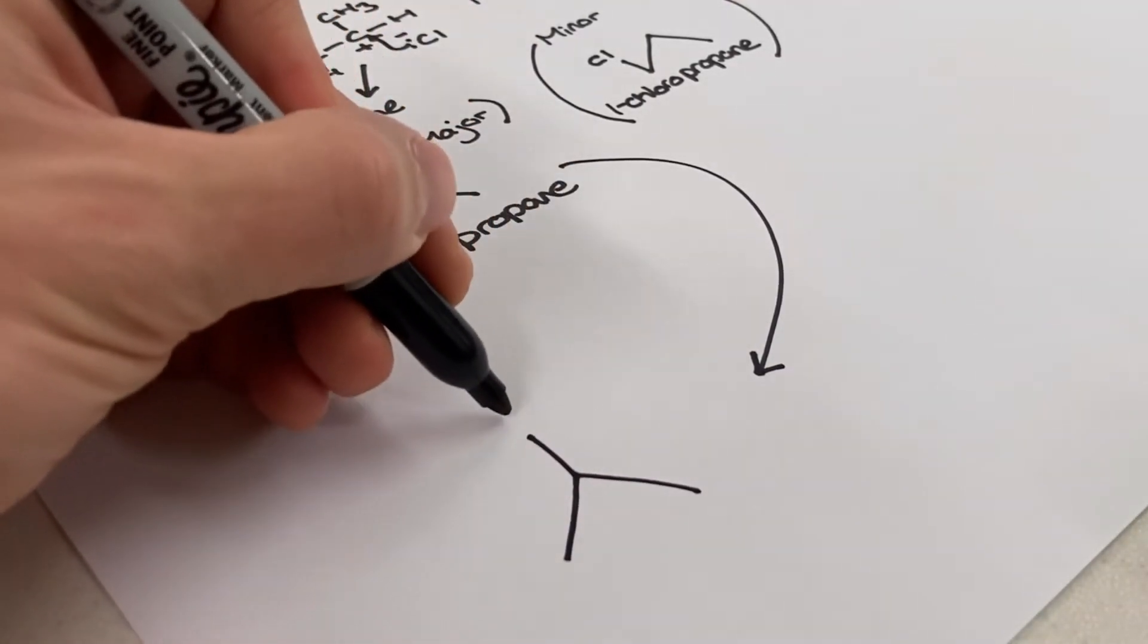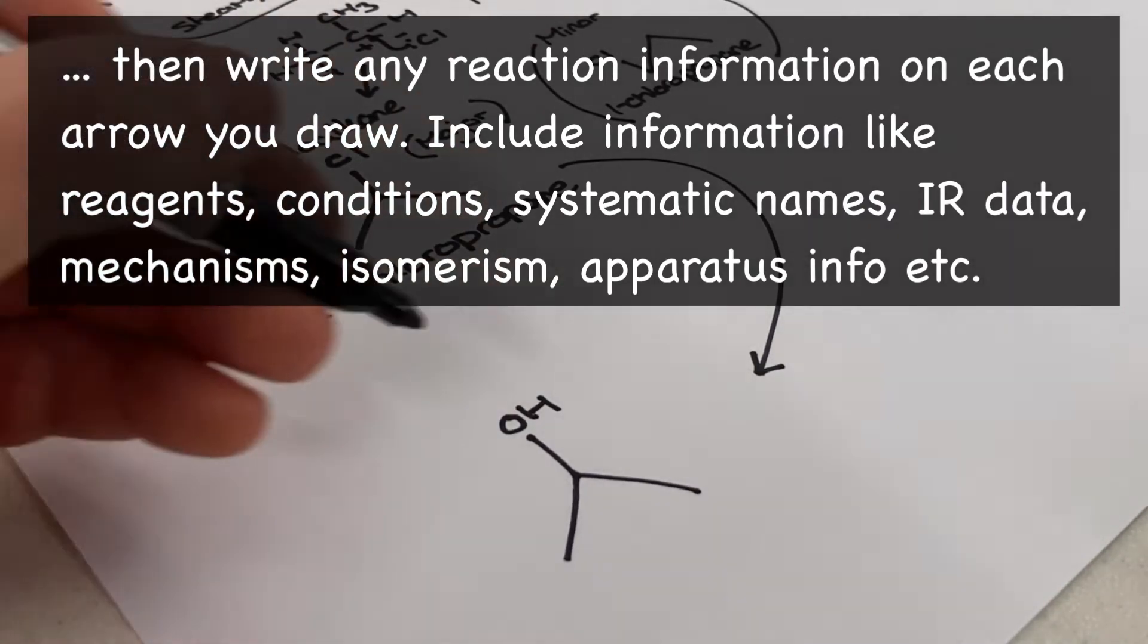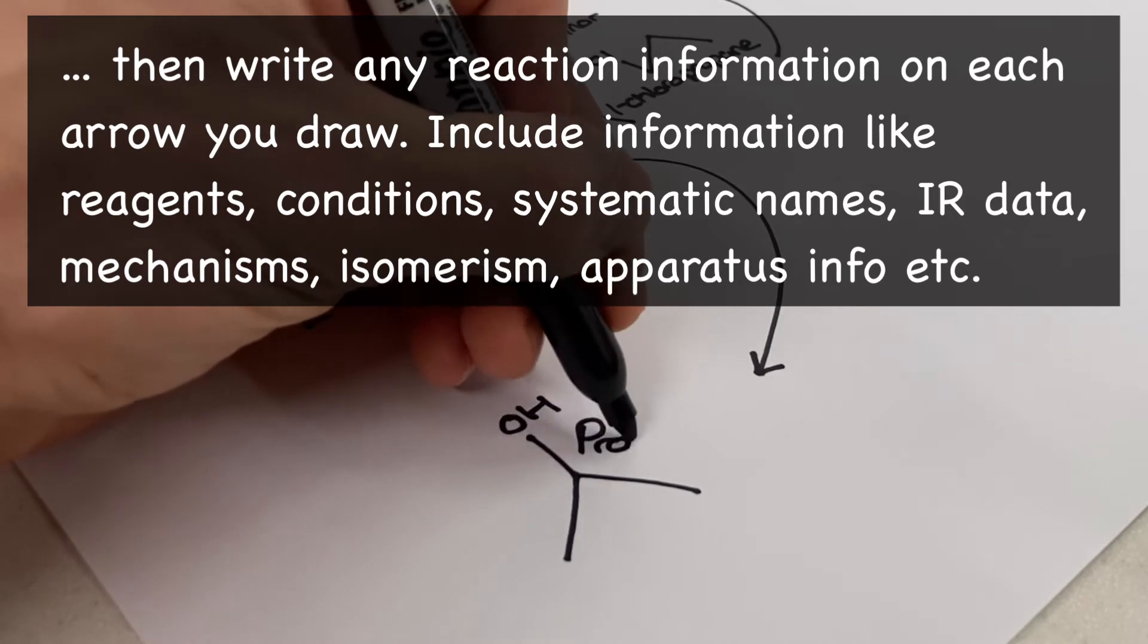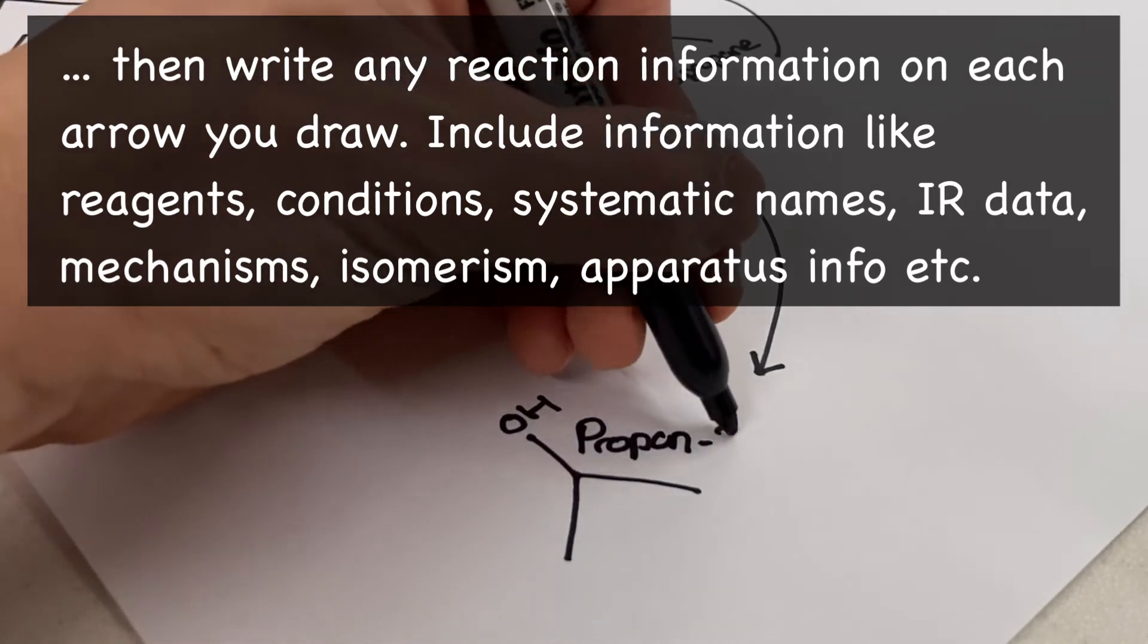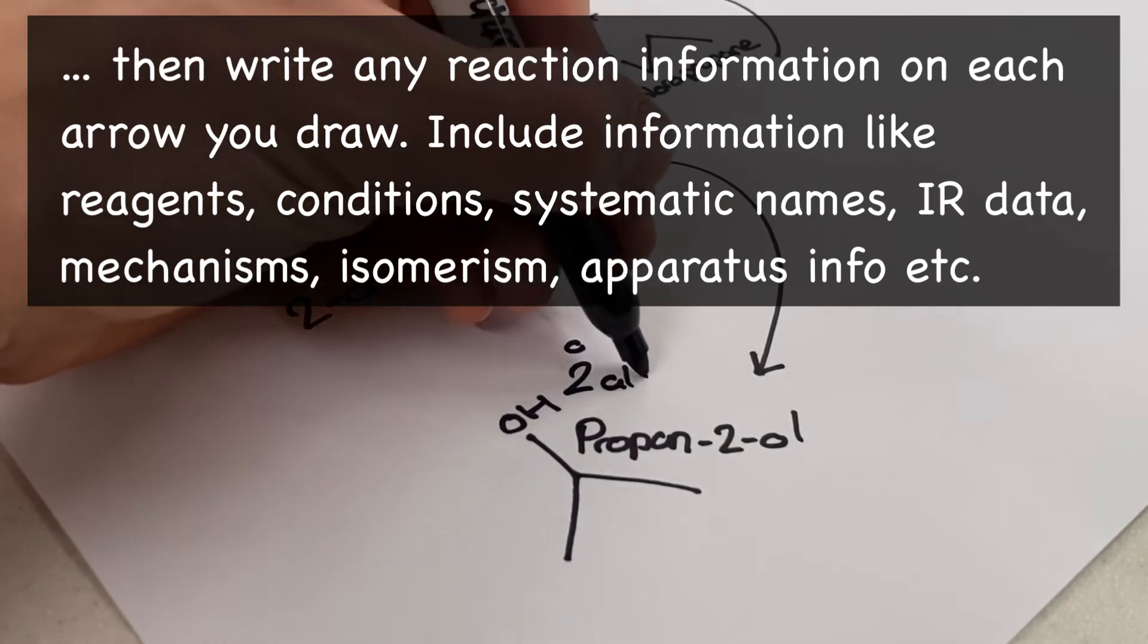Then like a flow chart you need to provide any details of reagents, conditions, anything like that necessary to perform all of these functional group changes across the arrow. Don't worry about repeating molecules on your sheet as some reactions can be reversed with different reagents.